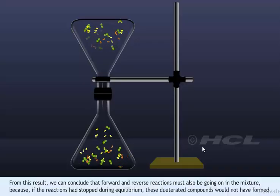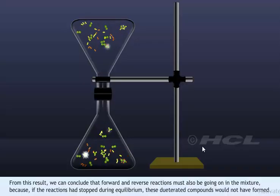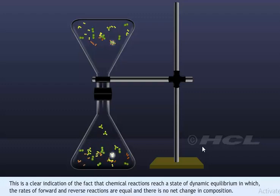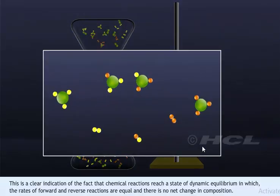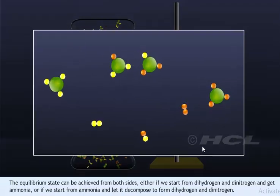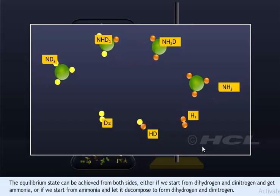From this result, we can conclude that forward and reverse reactions must be going on in the mixture, because if reactions had stopped during equilibrium, these deuterated compounds would not have formed. This is clear indication that chemical reactions reach a state of dynamic equilibrium in which the rates of forward and reverse reactions are equal and there is no net change in composition. The equilibrium state can be achieved from both sides — either starting from dihydrogen and dinitrogen to get ammonia, or starting from ammonia and letting it decompose to form dihydrogen and dinitrogen.